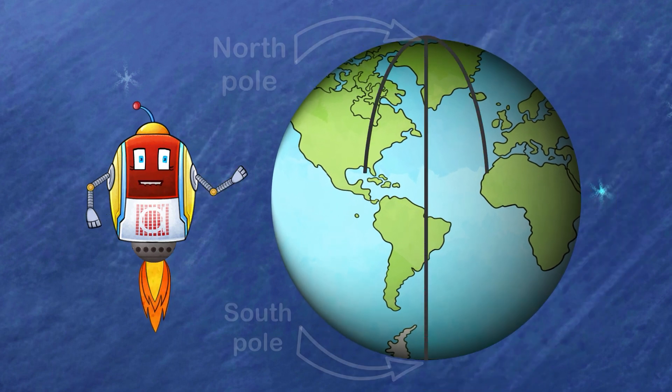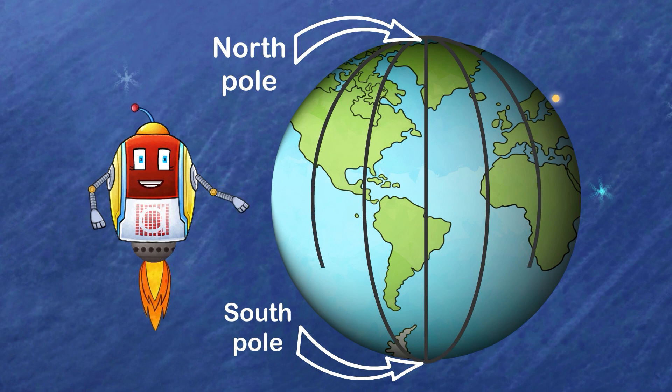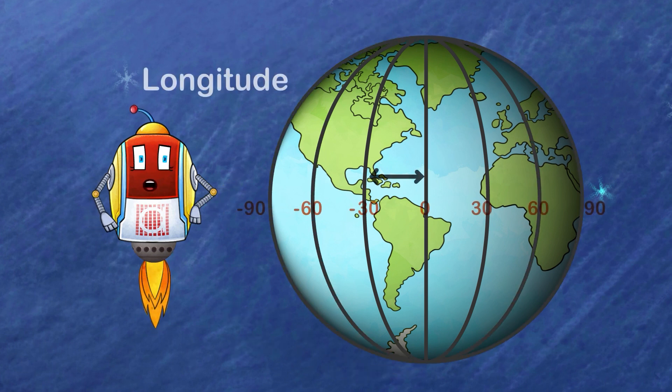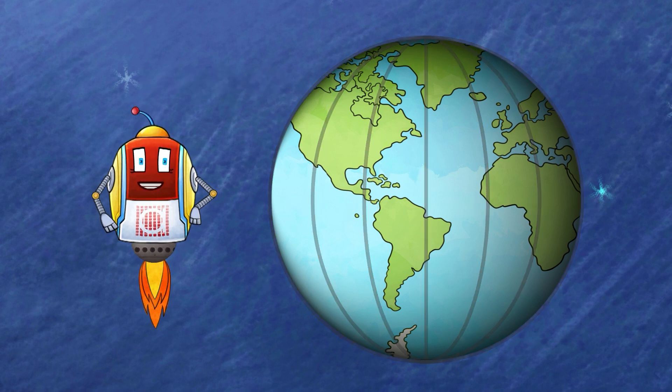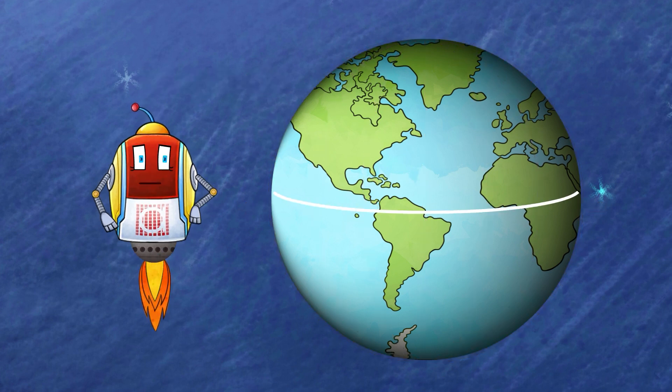Imagine the globe is wrapped with two sets of lines. The first set runs from the North Pole all the way to the South Pole, and these lines are called longitude. Longitude lines help us know where we are from east to west.